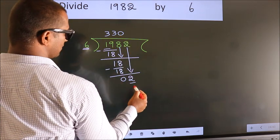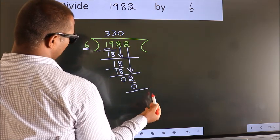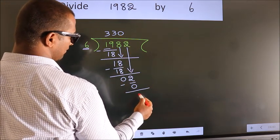So 6 into 0, 0. Now we subtract. We get 2.